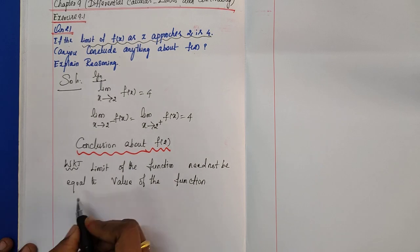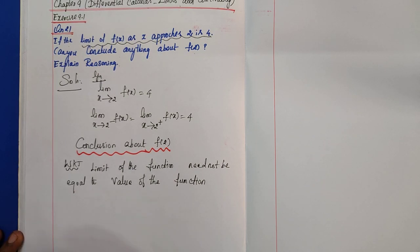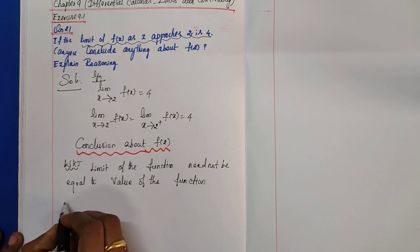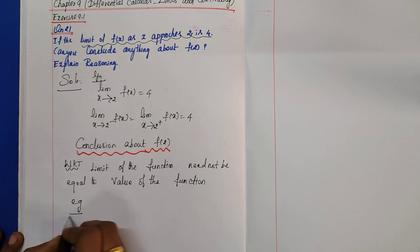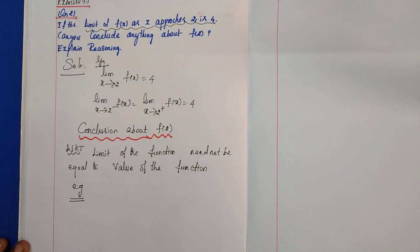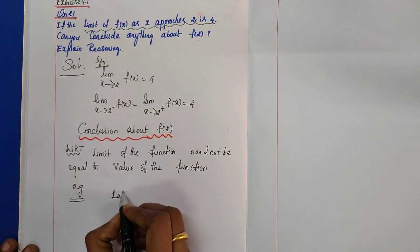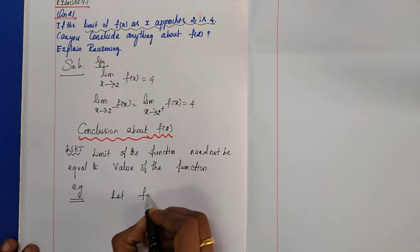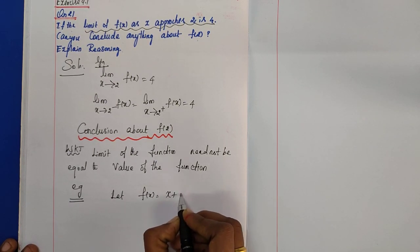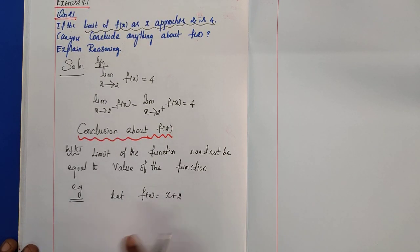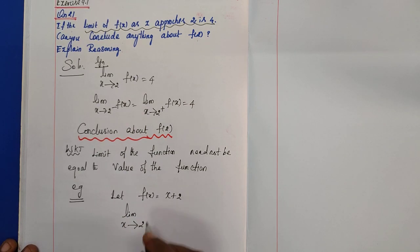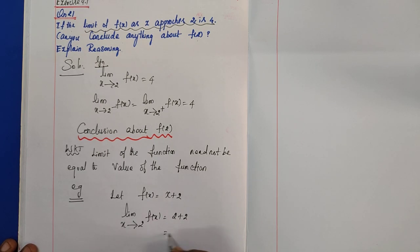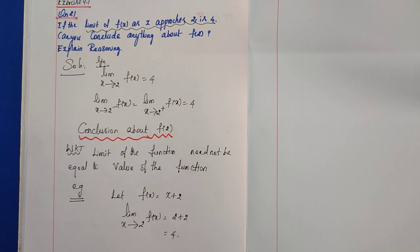Let us look at some examples. Take example 1: let f(x) = x + 2. Then the limit as x tends to 2 of f(x) equals 2 + 2 = 4. So the limit value is 4.